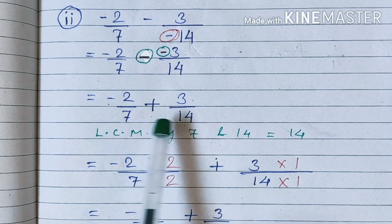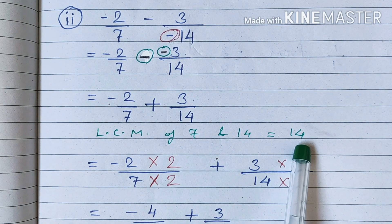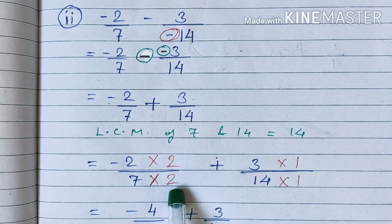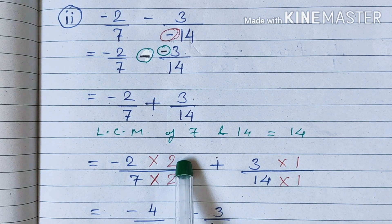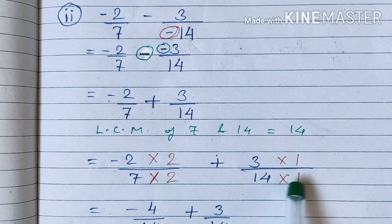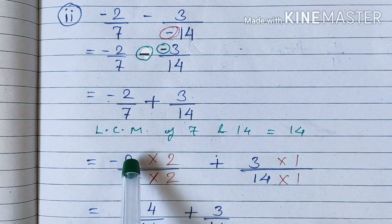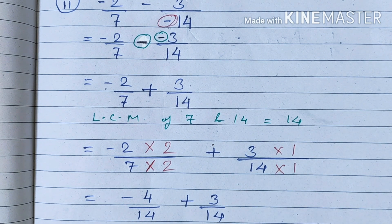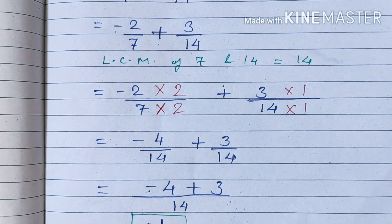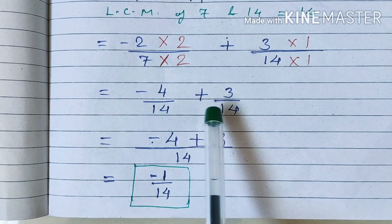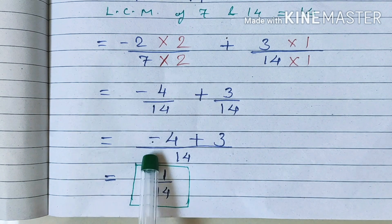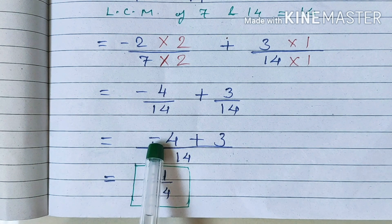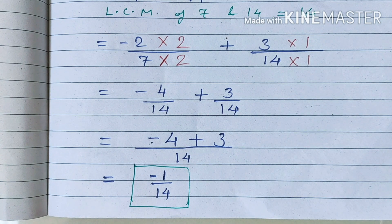The denominators are different, so we convert them into 14, since the LCM of 7 and 14 is 14. To convert 7 into 14, multiply by 2 — the numerator is also multiplied by 2. So minus 2 times 2 is minus 4 upon 14, plus 3 upon 14. Now the denominators are the same: minus 4 plus 3, with the sign of the greater number, gives minus 1 upon 14.